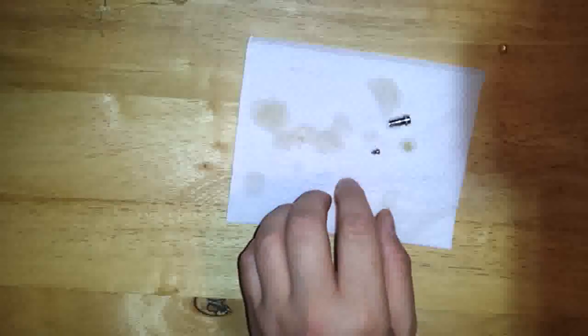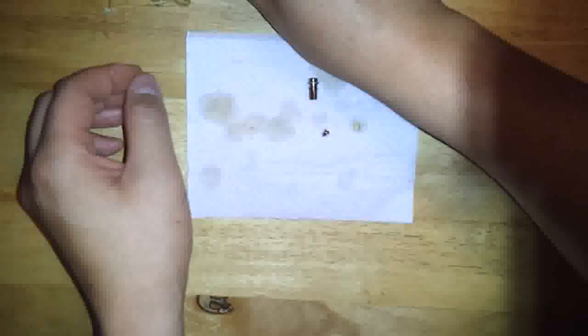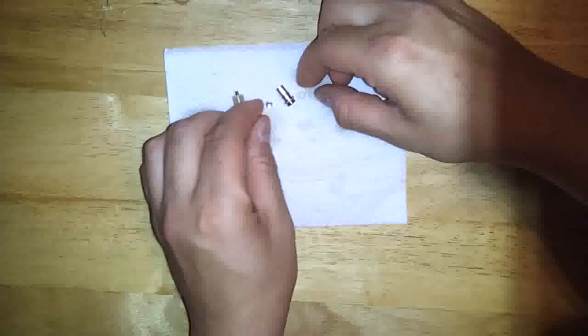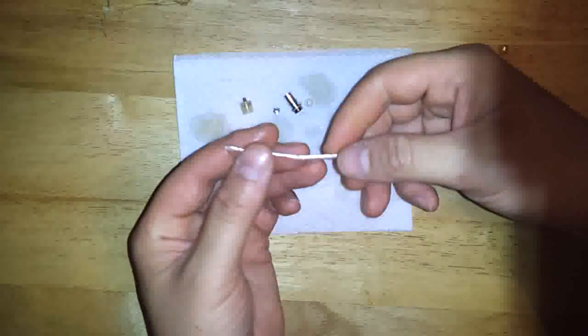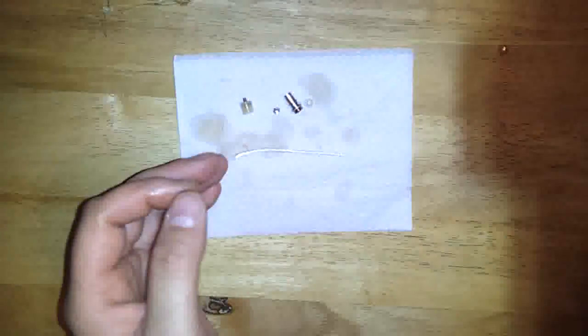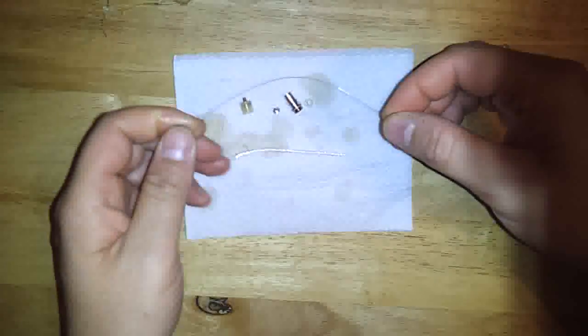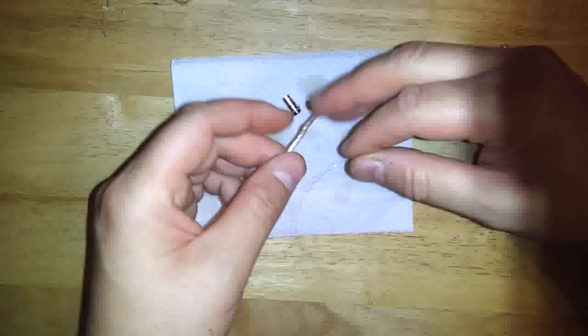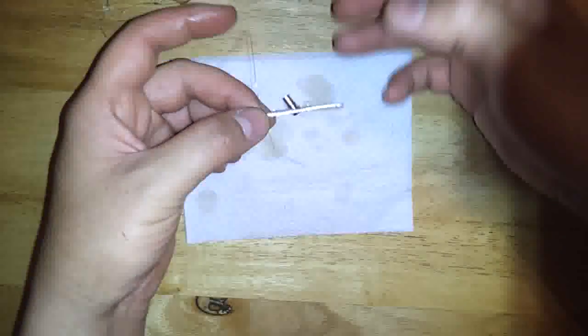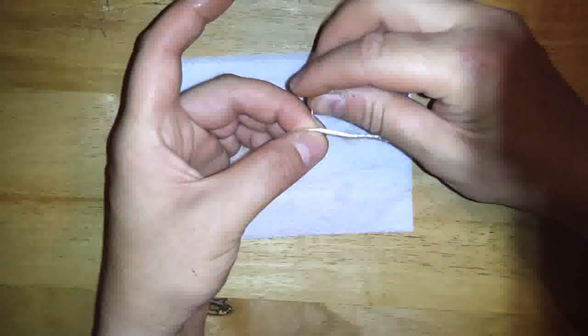So now what we have left is the parts of the coil head that we're gonna replace, or that we're gonna work with to rebuild. Now I'm gonna take a piece of 3 millimeter silica wick and a piece of 32 gauge kanthal wire. So now what I'm gonna do is I'm gonna wrap this right in the center of the silica. A lot of people like to use pins or something. I just usually wrap it just like this.